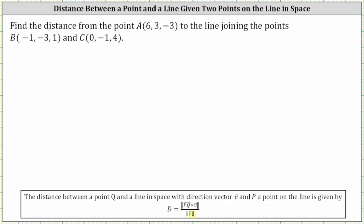Let's adjust the given information to match the formula. Point Q is the point not on the line — from the given information, that is point A. So let point Q be six, three, negative three. Point P is the point on the line. Both point B and point C are on the line, so we can use either. Let's use point C for point P since it has an x-coordinate of zero, so point P is zero, negative one, four.